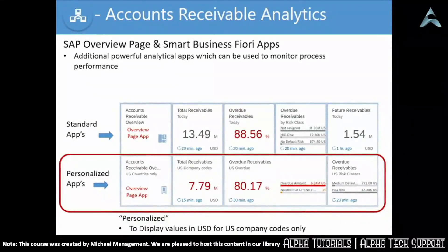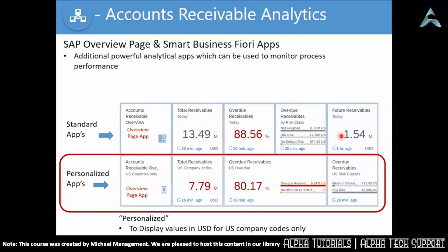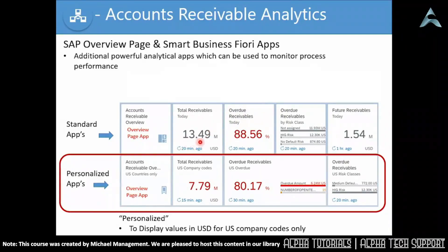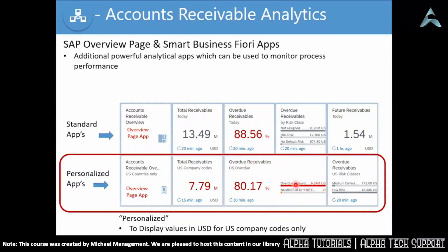The two main types of apps are overview page apps and smart business apps, both giving additional powerful analytical capability. Each tile or square represents a different Fiori app. The top row shows standard apps delivered by the SAP system out of the box, where values often default to Euro and cover all company codes. What you can do with each app is personalize them — saving a personalized version of the standard app. For example, the standard system showed 13.49 million total receivables across all company codes, whereas a personalized version for U.S. company codes only shows 8 million. Another personalized tile was created as a double-wide tile showing a percentage and a value.